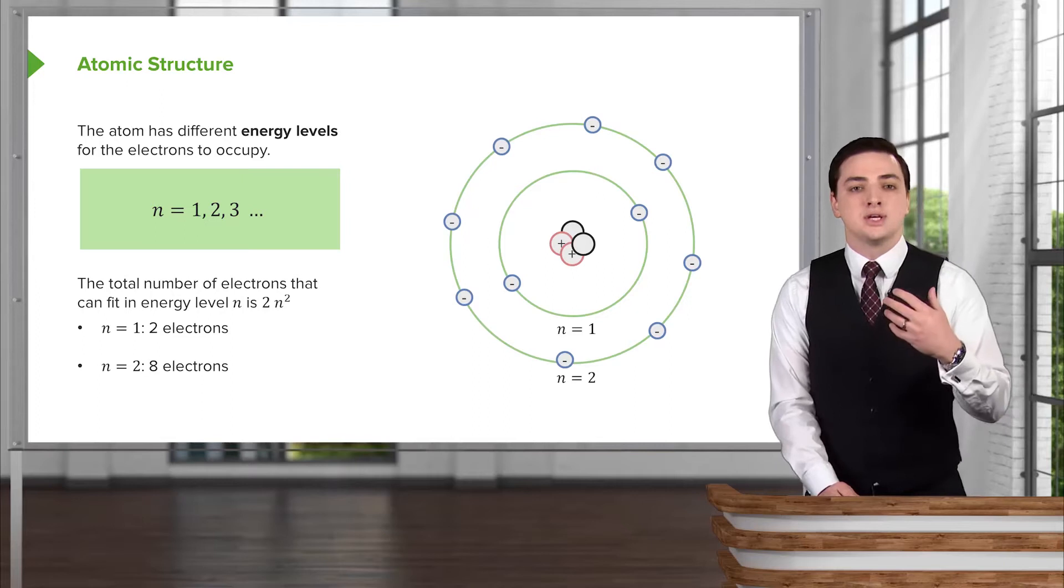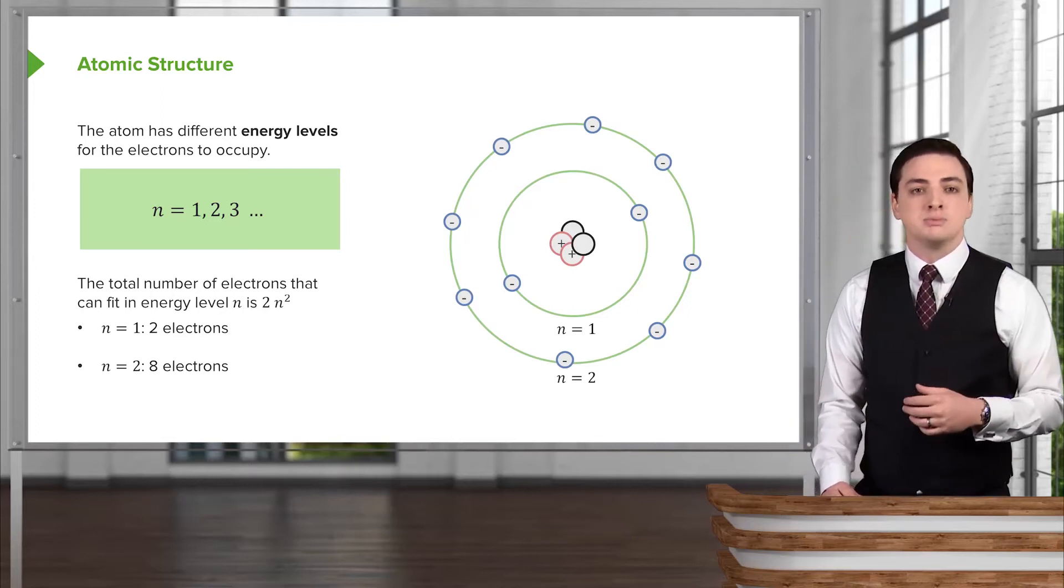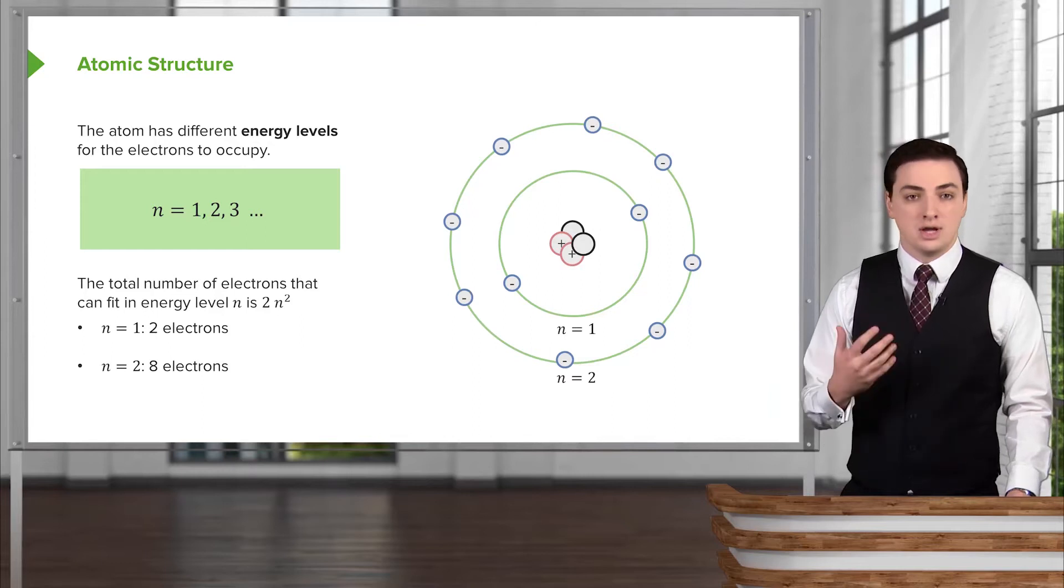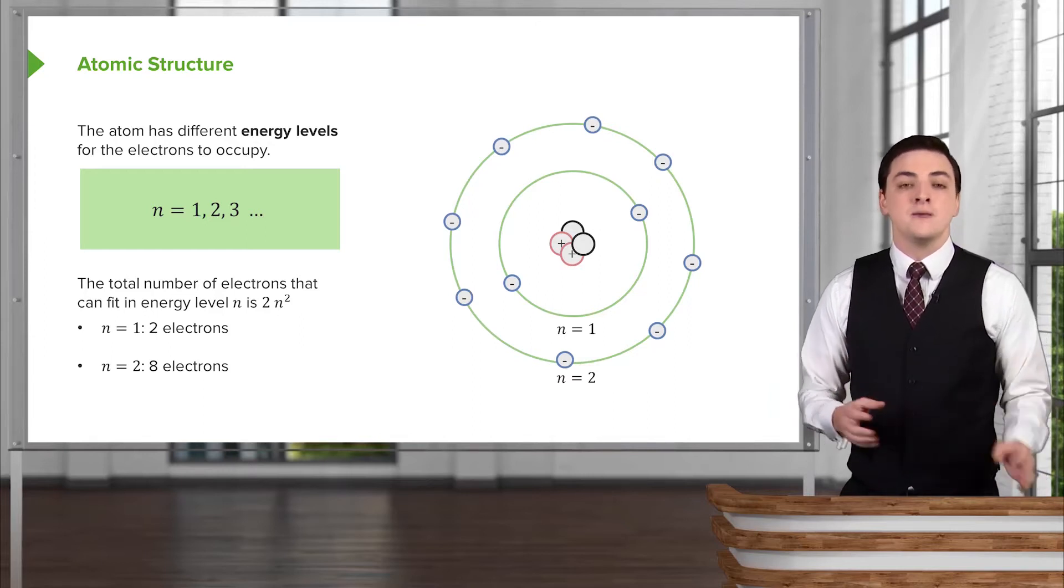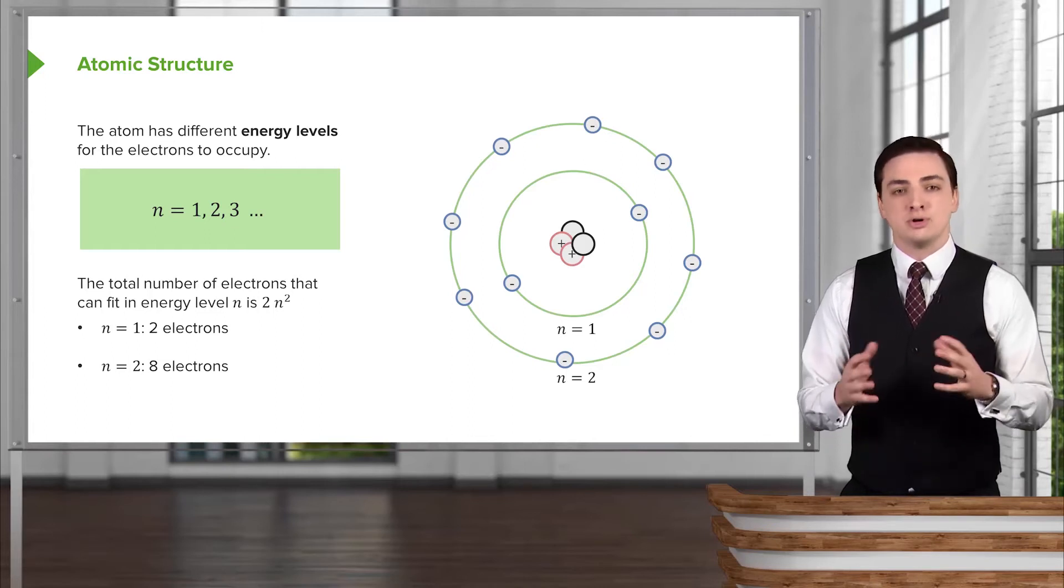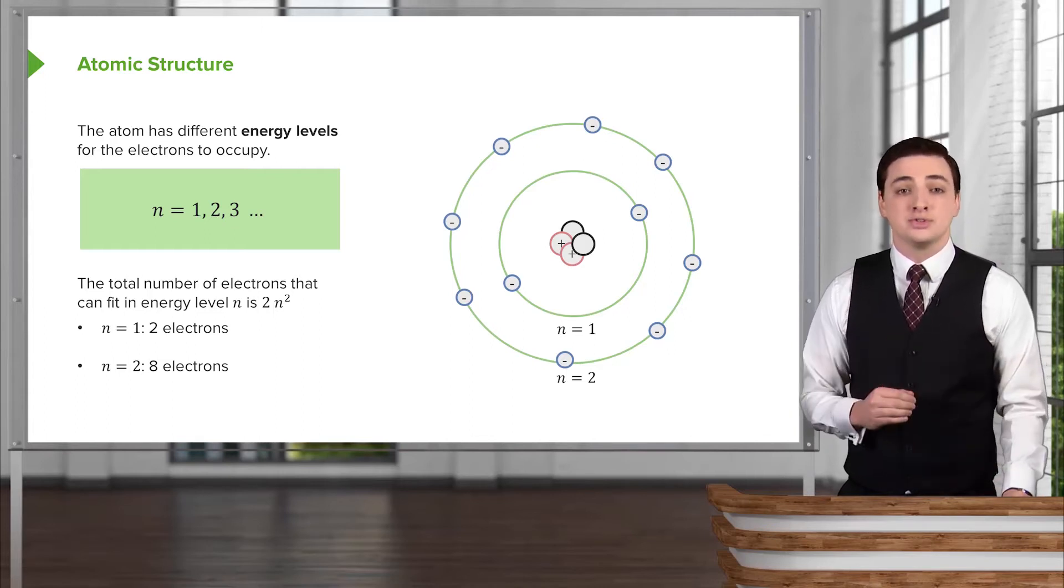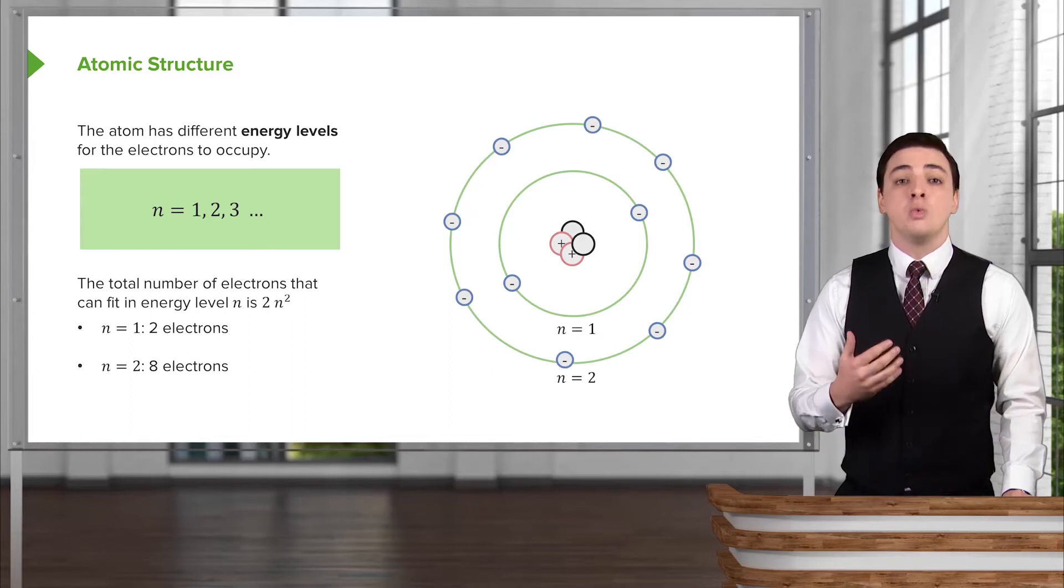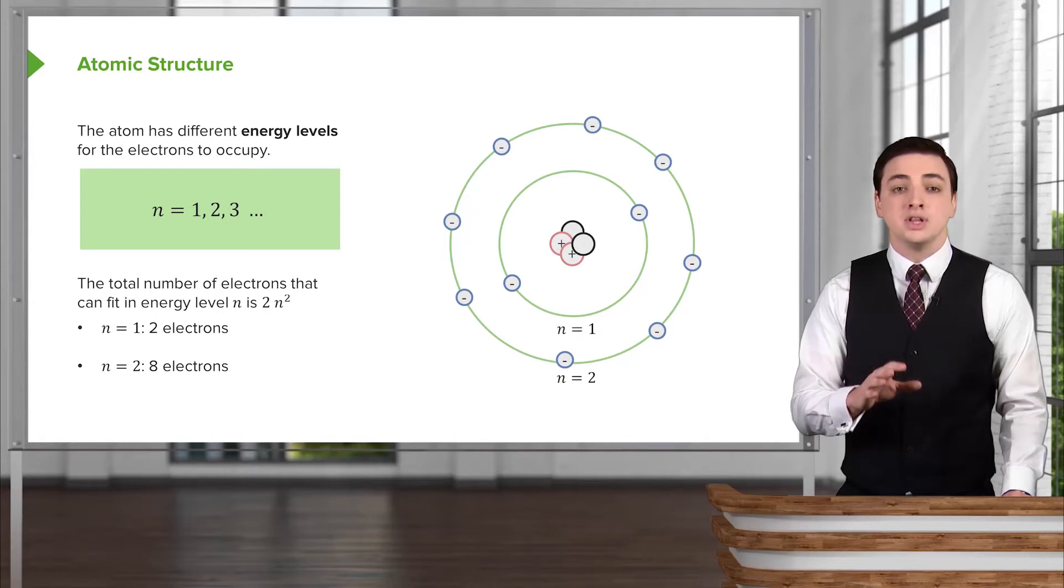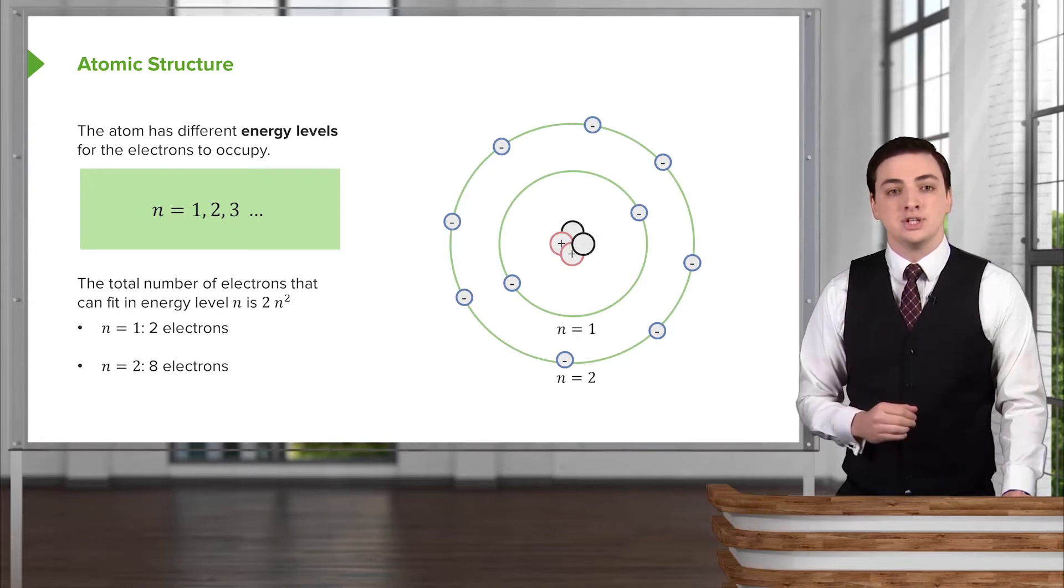One other thing about these orbitals is that there can only be a certain number of electrons in these orbitals. So we're already introducing many restrictions on exactly how this Bohr model atom can work. So keep track of the restrictions that we're imposing. One, we can only be in particular energy levels. And two, we can only have a certain number of electrons in a given energy level.